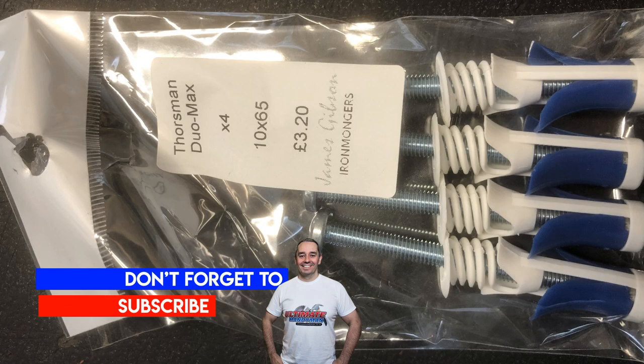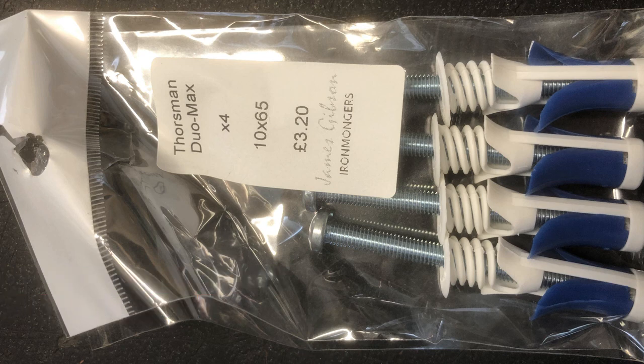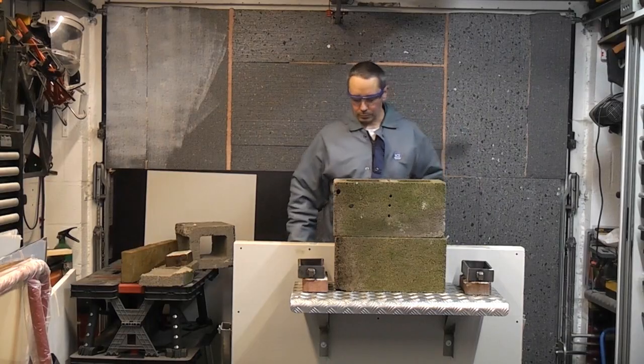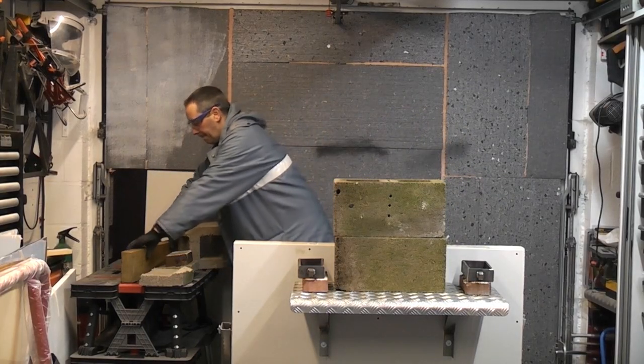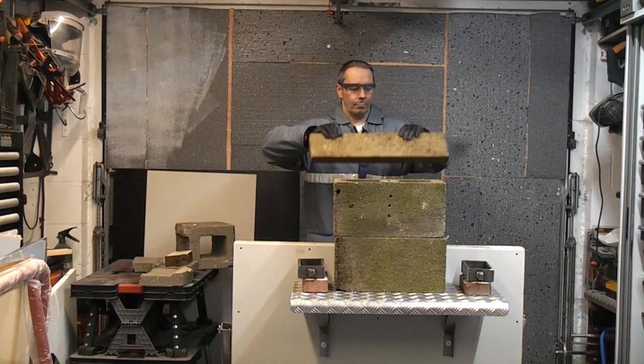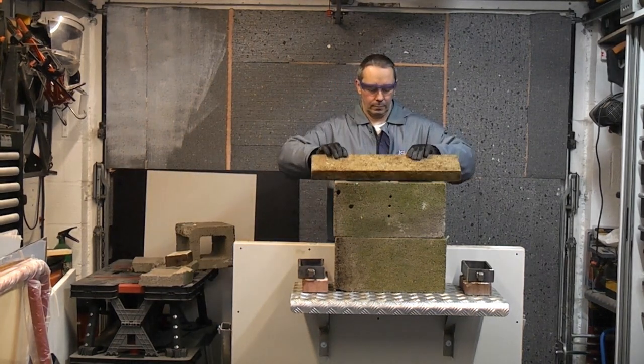So that's the Toysman Duo Max. They are definitely one of the easiest plasterboard fixings that you can use. In a few weeks time, I will do a test and we'll see just how much weight these brackets can take using those fixings, and we'll see how much weight it can take before the plasterboard fails.